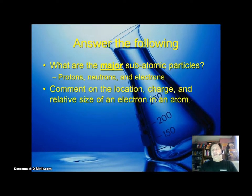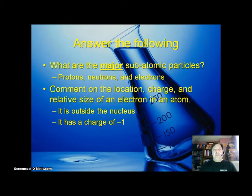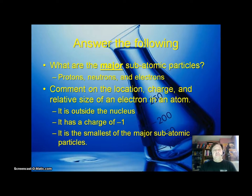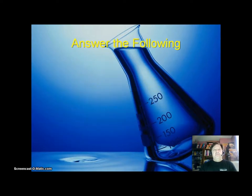Comment on the location, charge, and relative size of an electron in an atom. What is the location, charge, and relative size? Well, it's outside the nucleus. That's one thing. That's the location. It has a charge of minus one, and it is the smallest of the major subatomic particles.